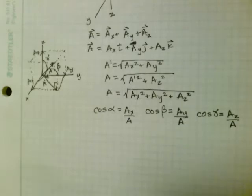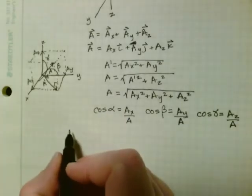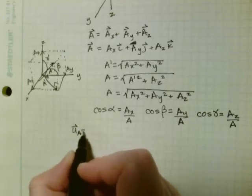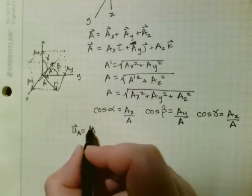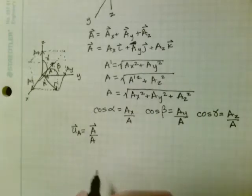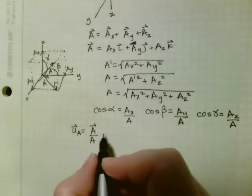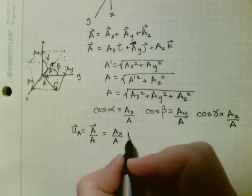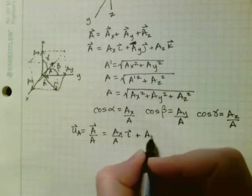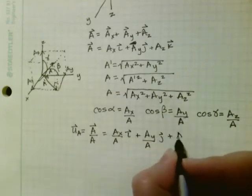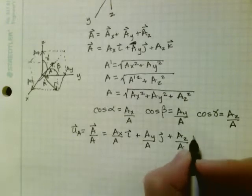So the other thing that we can find from this is a directional vector or position vector. And that's called ua, which is equal to the vector a divided by its magnitude. So that would be equal to ax over a i plus ay over a j plus az over a k.